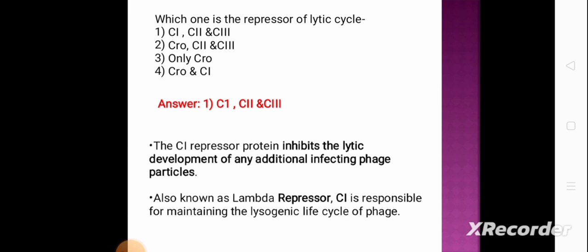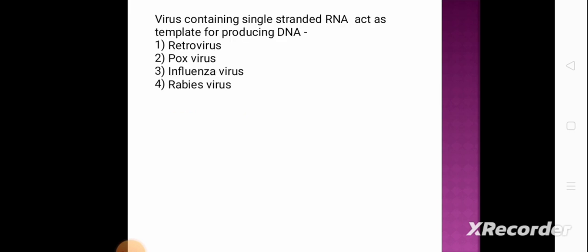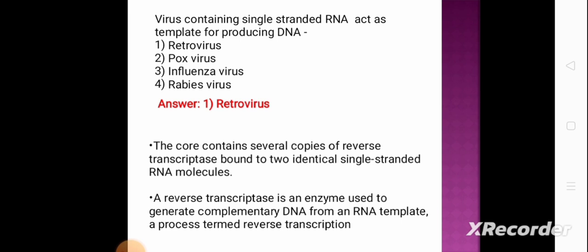Next question: virus containing single-stranded RNA that acts as a template for producing DNA — option 1: retrovirus, option 2: poxvirus, option 3: influenza virus, option 4: reovirus. The correct answer is retrovirus. The core of the retrovirus contains several copies of reverse transcriptase bound to two identical single-stranded RNA molecules. Reverse transcriptase is an enzyme used to generate complementary DNA from an RNA template. This process is termed reverse transcription — the formation of DNA from an RNA template using reverse transcriptase.